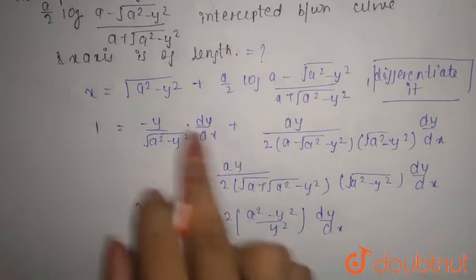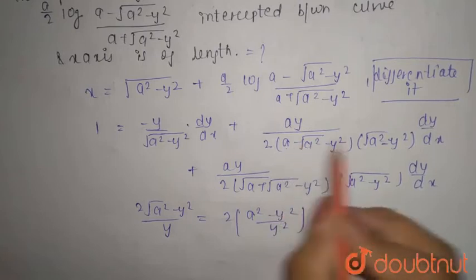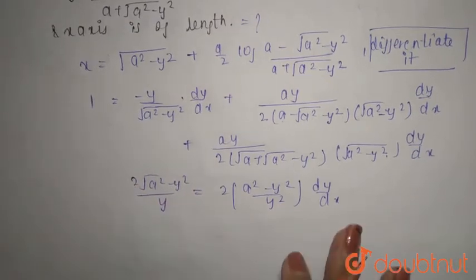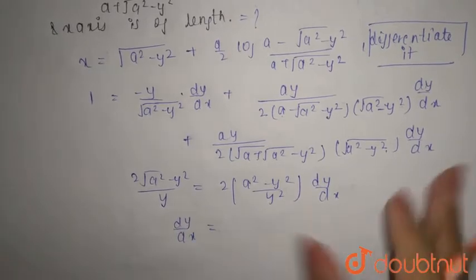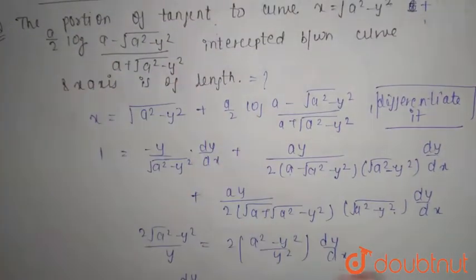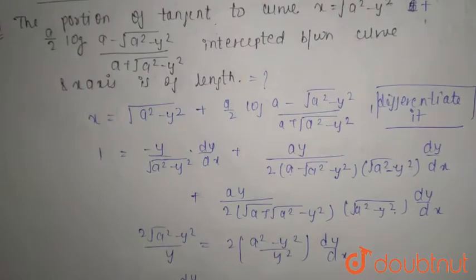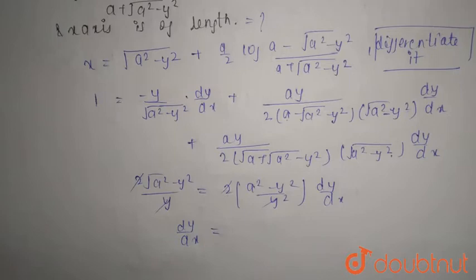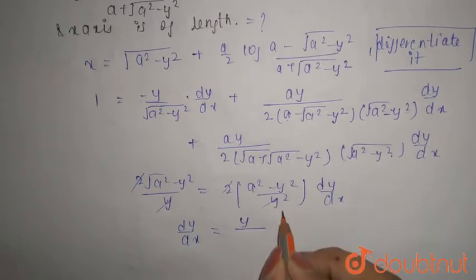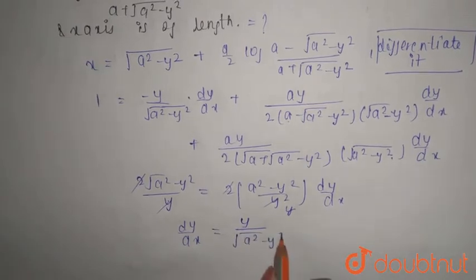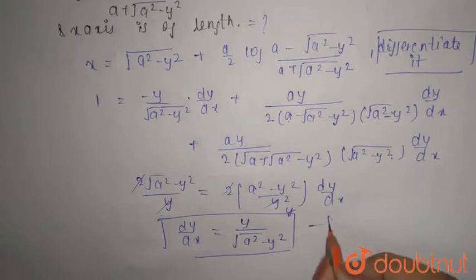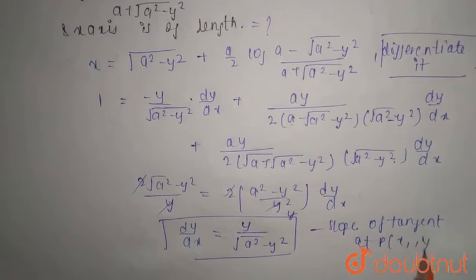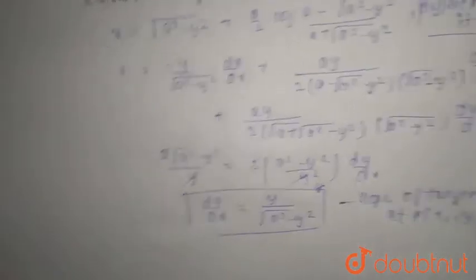We take common factors, and after cancellations — the 2 cancels, one y cancels, and the root cancels — we are only left with y over root(a² - y²). This is your slope. So the slope of the tangent at point P(x₁, y₁) is dy/dx = y₁ over root(a² - y₁²).